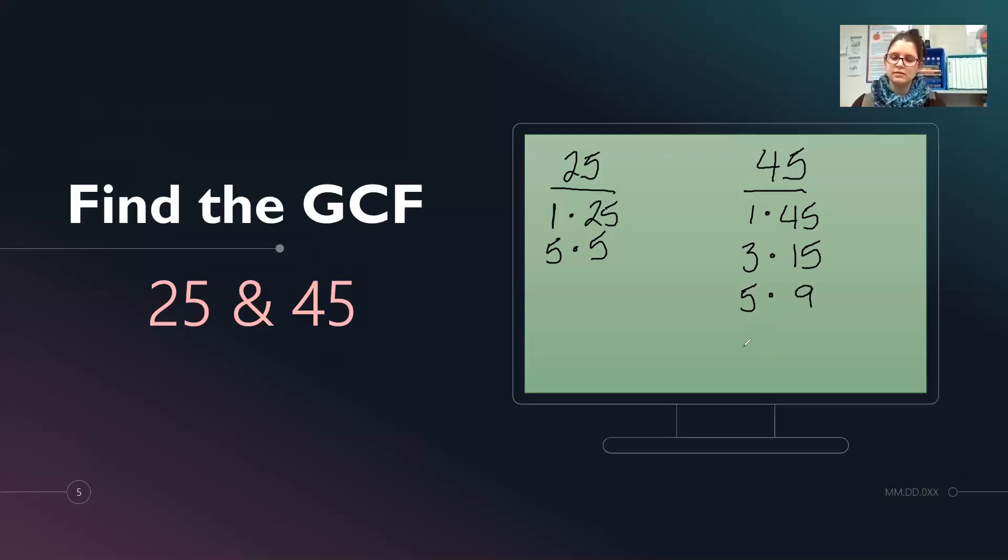Skip 6. 7. Well, I know 7 times 7 is 49. So 7 won't work. 8 is an even number. Next is 9. We already have 9. So that's all of our factors.